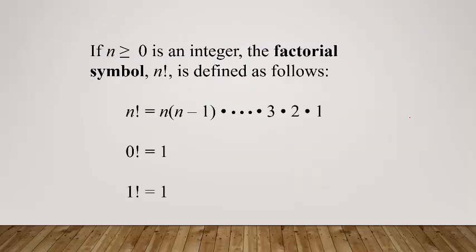I want to now introduce the factorial symbol. If n is a number greater than or equal to zero but it's also an integer, that means it's numbers like zero, one, two, three, four - no fractions or decimals.